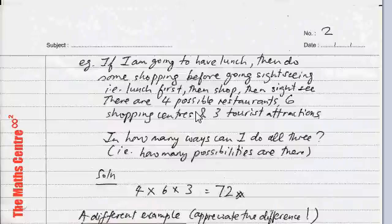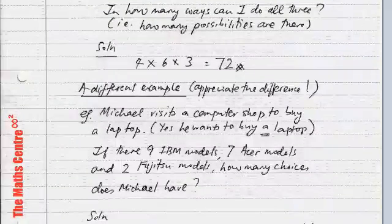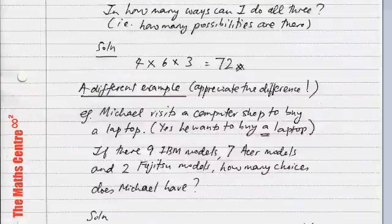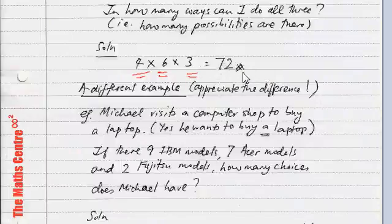So, the first thing can be done in, let's look at it slowly, I have a choice among four restaurants. So, the first thing can be done in four ways, and the second task, which is shopping, can be done in six ways. And the last task, which is going to some tourist attractions, can be done in three ways. So, four times six times three, I have 72 ways in which I can do those successive tasks.